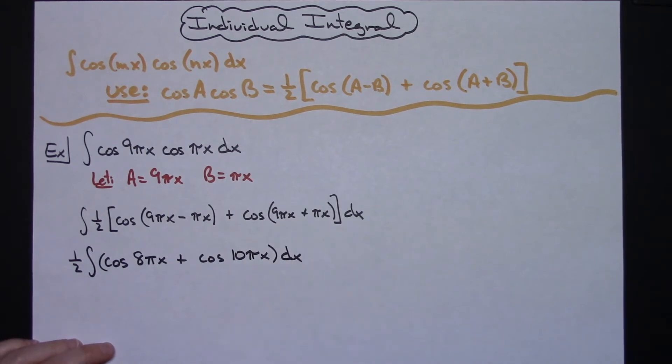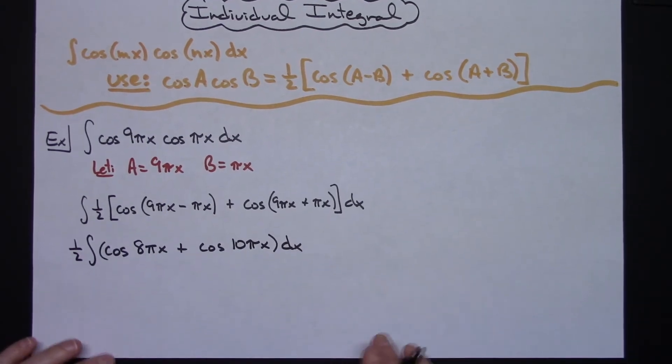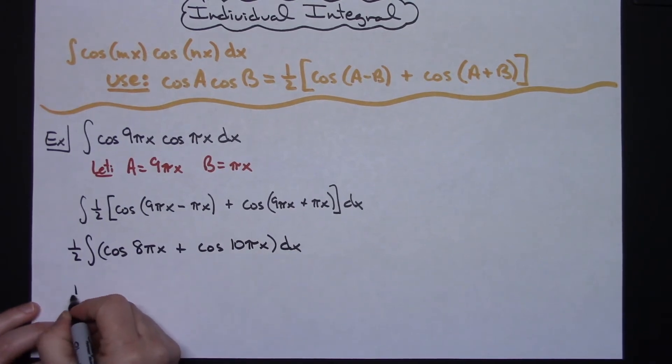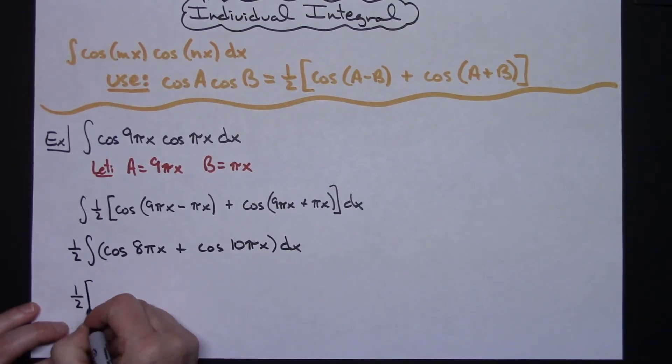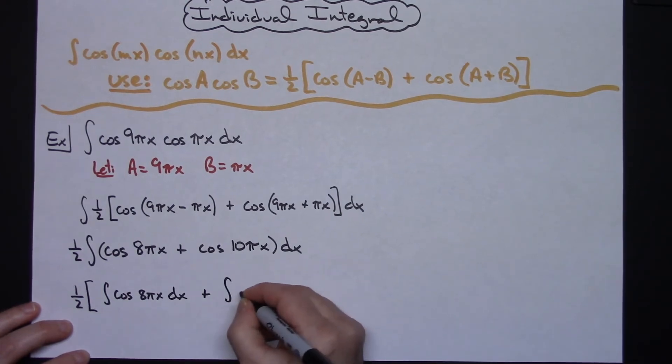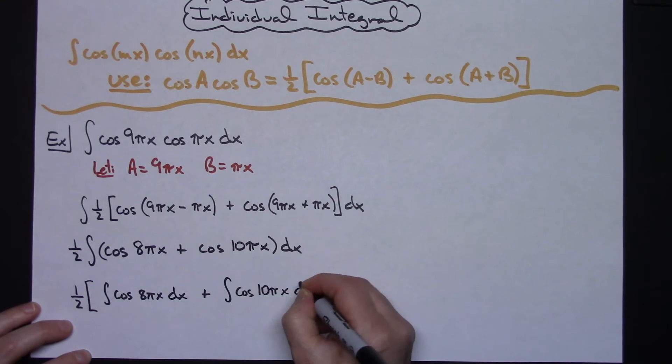At this point I can take this integral and break it up into two separate integrals, so I'm going to have one half times the integral of cosine 8πx dx plus the integral of cosine 10πx dx.